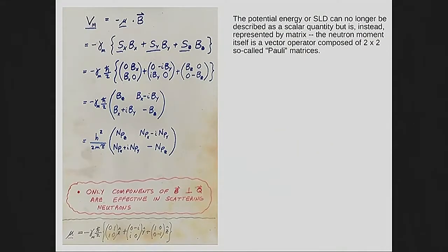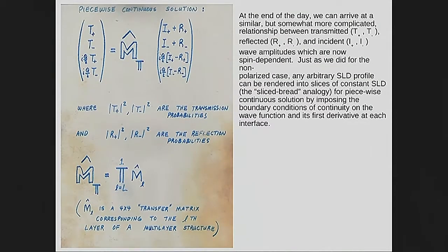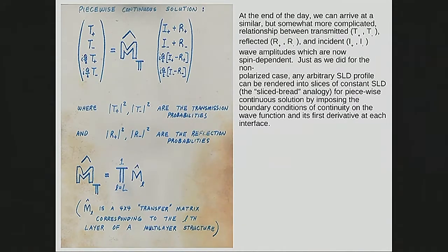All of this is handled by solving the two equations simultaneously, treating the potential as a matrix quantity for the magnetic interaction — thanks to Professor Pauli. We now have four reflected and transmitted amplitudes: R-plus, R-minus, T-plus, and T-minus, and we have to be able to distinguish all of them.